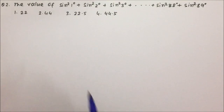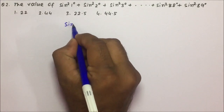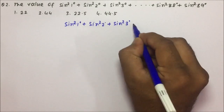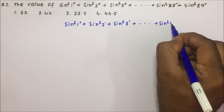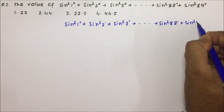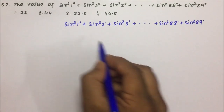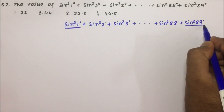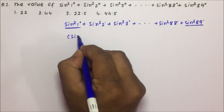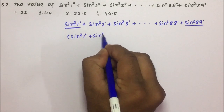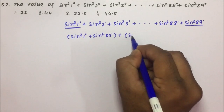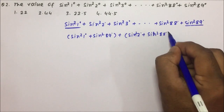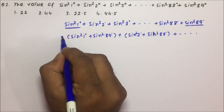Question number 2 is a very important question. The value of sin²1° + sin²2° + sin²3° + … + sin²88° + sin²89°. First, search for the complementary pairs and then let us see what we are going to do. So sin²1 + sin²89: 1 + 89 = 90 degrees. We will club sin²1° with sin²89°, and sin²2° with sin²88°, and so on.